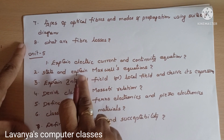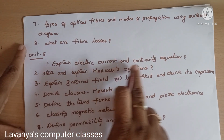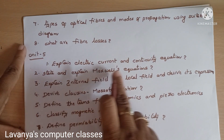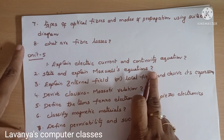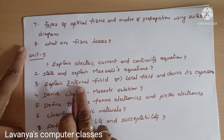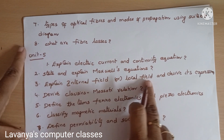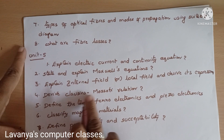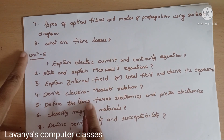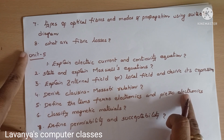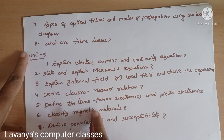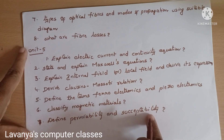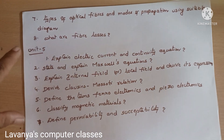Unit 5 questions: First, explain electric current and the continuity equation. Second, state and explain Maxwell's equations — this is an important question. Third, explain internal field or local field and derive its expression. Fourth, derive the Clausius-Mossotti relation. Fifth, define the terms ferroelectrics and piezoelectrics. Sixth, classify magnetic materials. Seventh, define permeability and susceptibility.